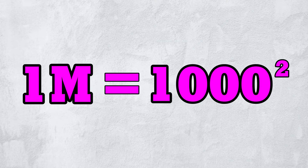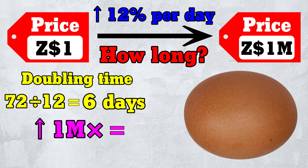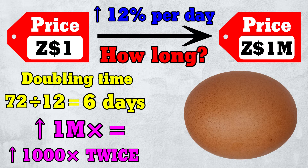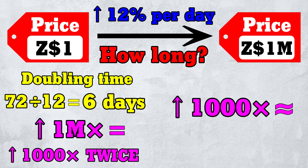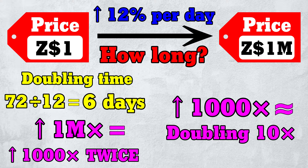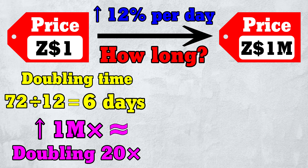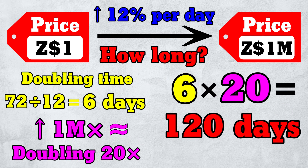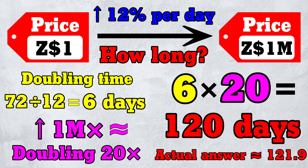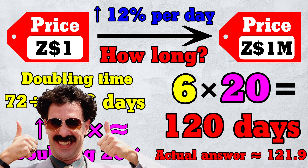Notice that 1,000,000 is 1,000 squared, so growing a million-fold is the same as growing a thousand-fold twice. Trick 2 says that growing a thousand-fold is roughly the same as doubling 10 times, so growing a million-fold must be roughly the same as doubling 20 times. Altogether, it'll take roughly 6 times 20, or 120 days. This rough answer is, again, remarkably close to the actual answer.